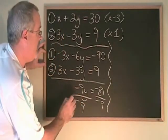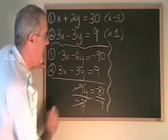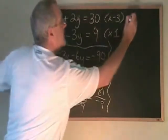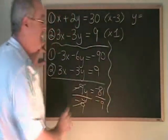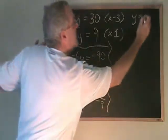If I isolate this y by dividing both sides by negative 9, these cancel. My y is isolated and negative 81 divided by negative 9 is positive 9.